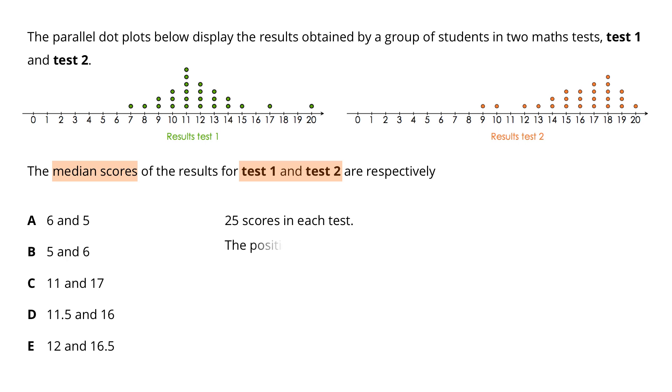This means that the position of the median score is n plus 1 divided by 2. That gives us 26 divided by 2. So we are looking for the 13th score.